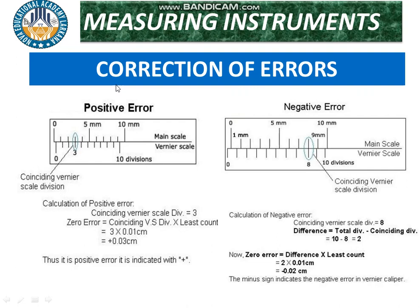Yesterday we also learned about the errors of the Vernier Caliper. There are two types: positive error and negative error. In positive error, the zero of the Vernier scale does not coincide with the zero of the main scale but lies on the right side. In negative error, the zero of the Vernier scale lies on the left side, clearly crossing the zero of the main scale.